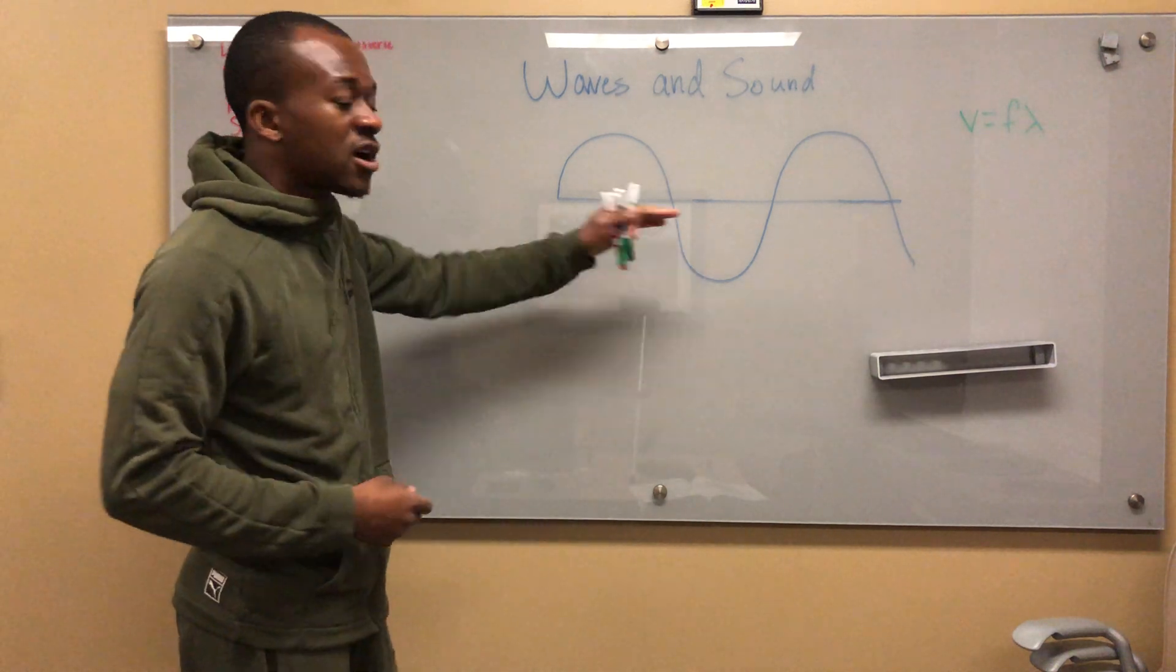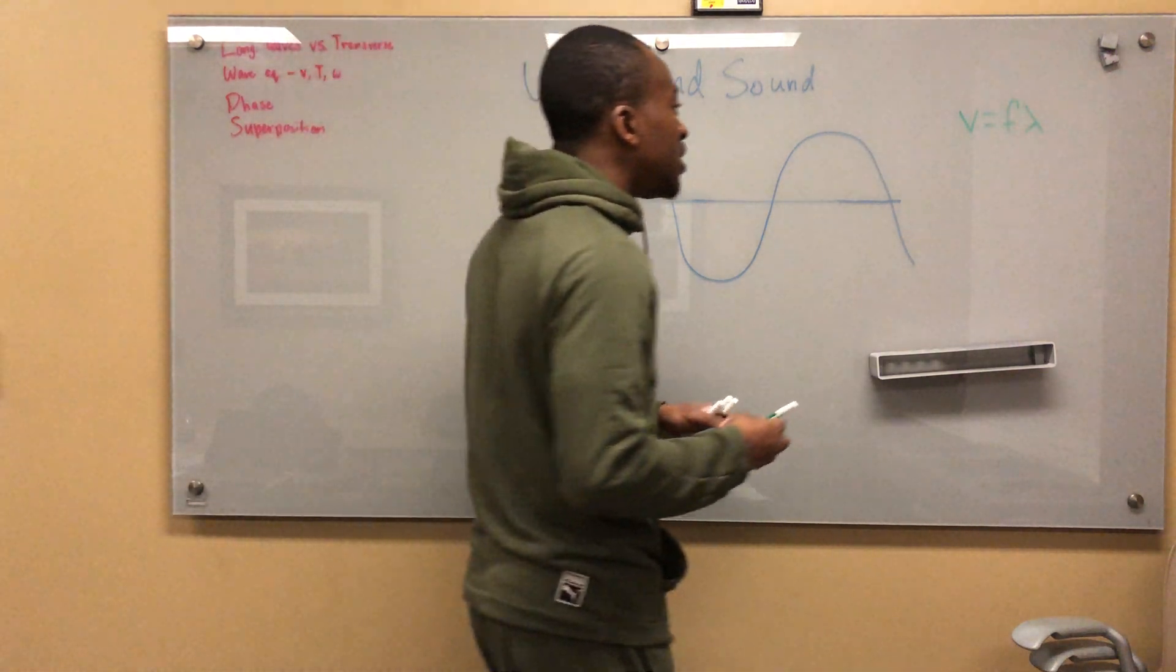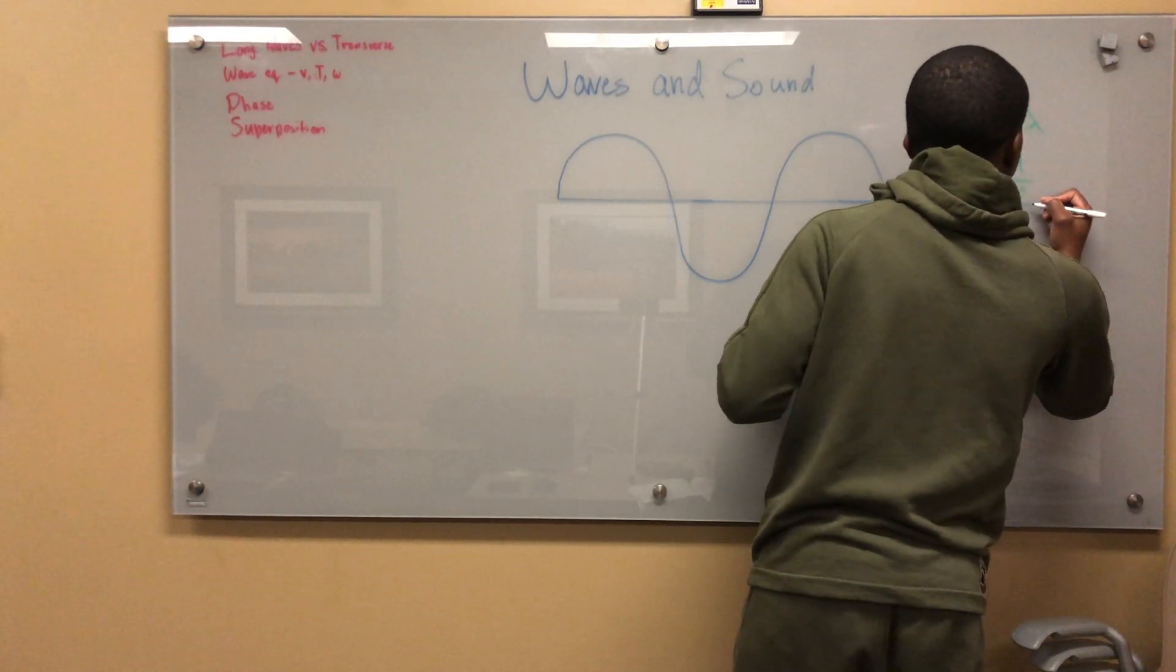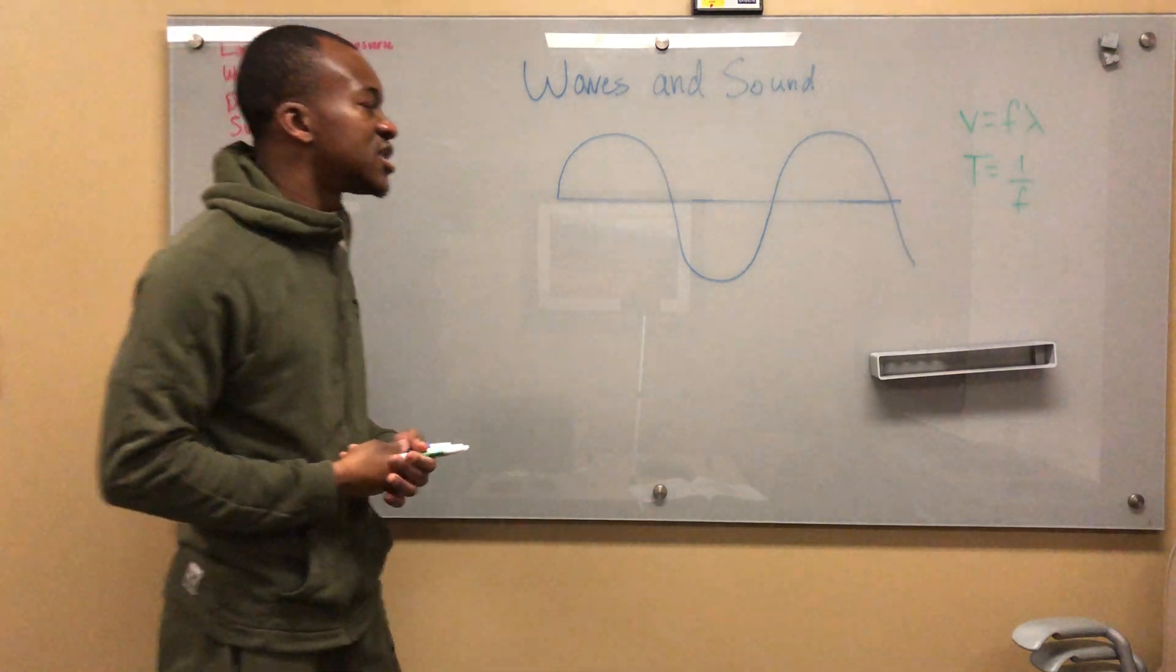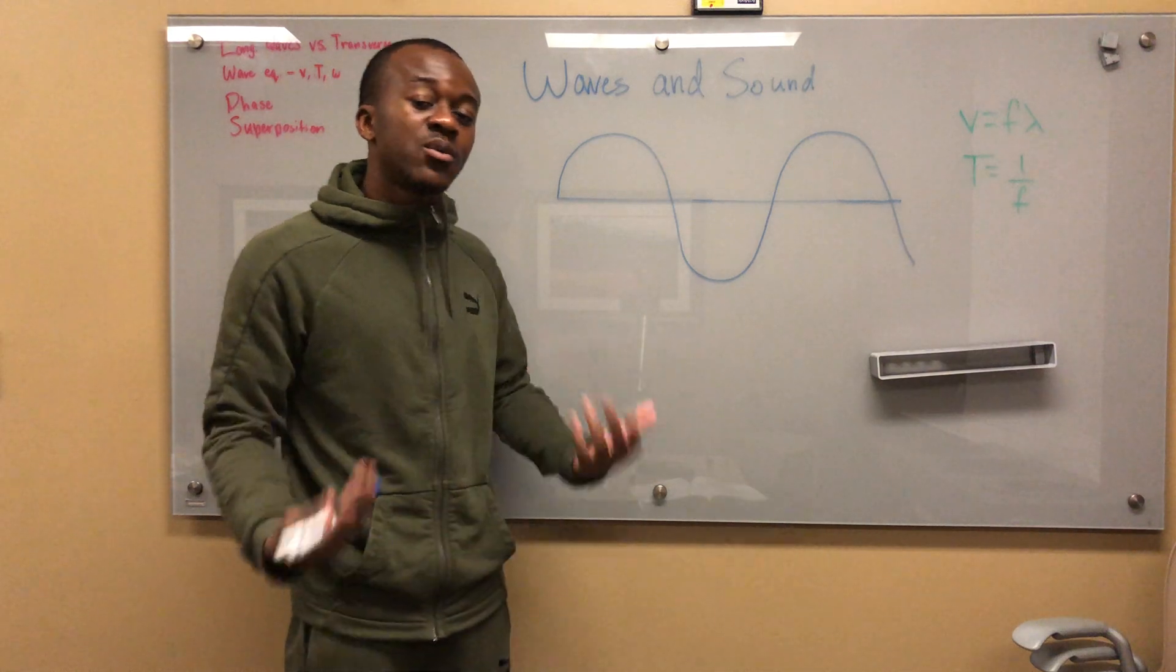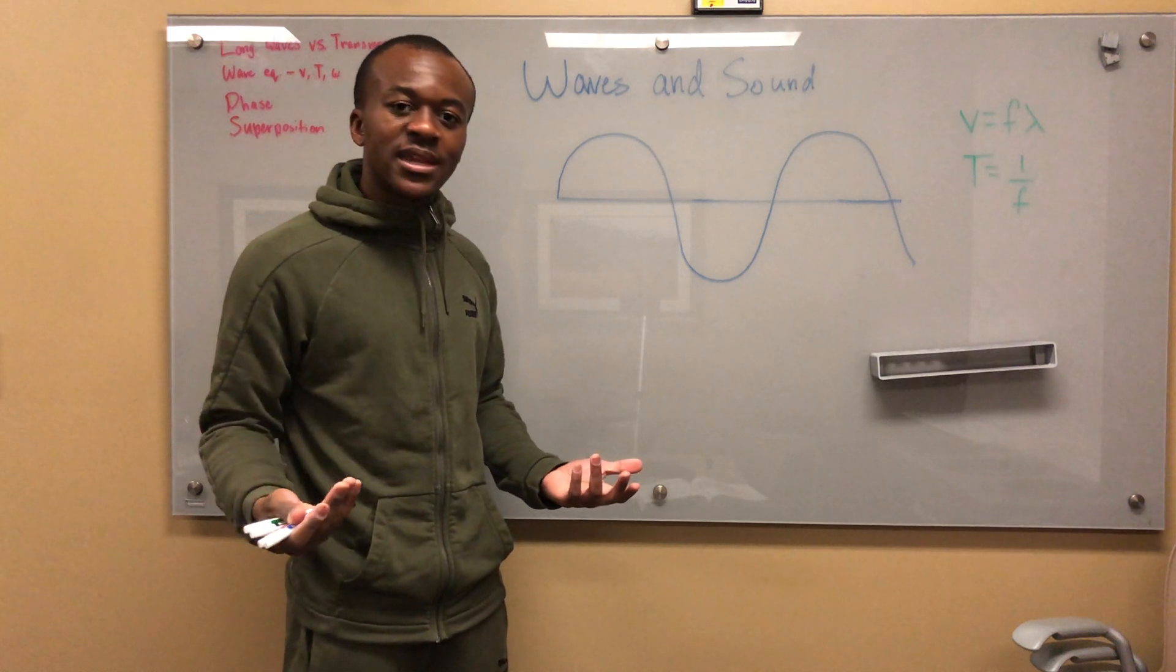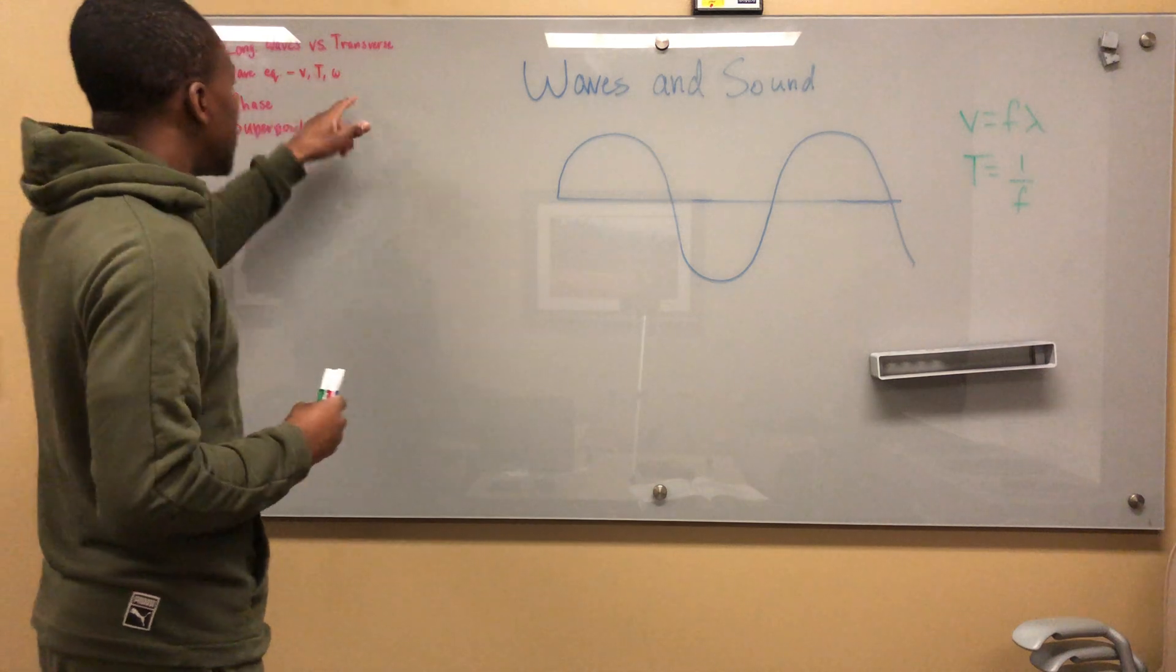Frequency is basically how often the wave reaches a certain point. Lambda stands for the wavelength. There's also another formula you need to know: T is equal to 1 over f. This is called the period. You divide 1 by the frequency to get the period, which is basically how long it takes a wave to complete.